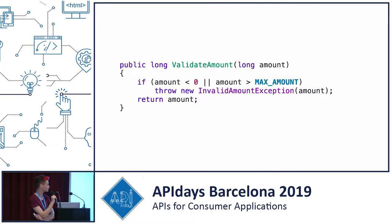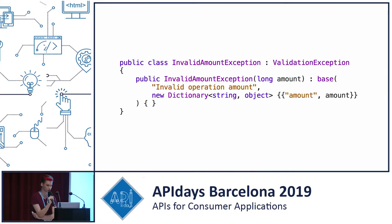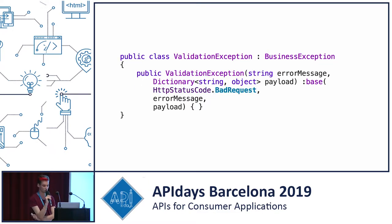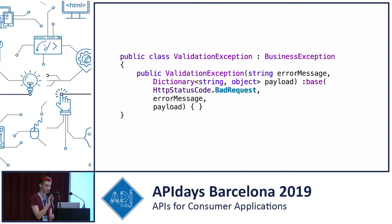In our basic validation exception, we call another exception — a business exception signature — with a payload built from the previous exception, an HTTP status code, the message, and so on. What do we receive from this? We're throwing an exception, we get pretty readable code, because it's obvious what happens when we throw an invalid amount exception with the amount. And somewhere inside, we build an API response with the HTTP message, error code, our internal application error code, payload, and anything else we need.